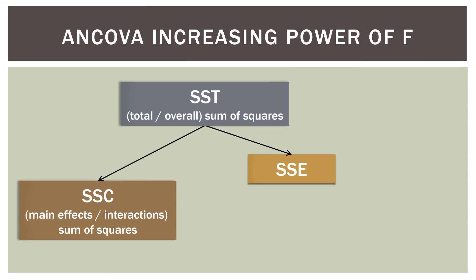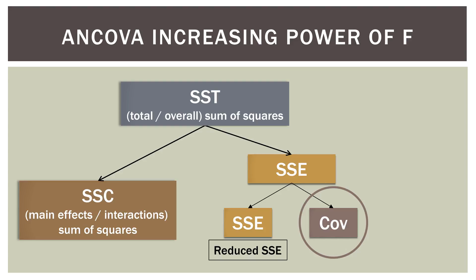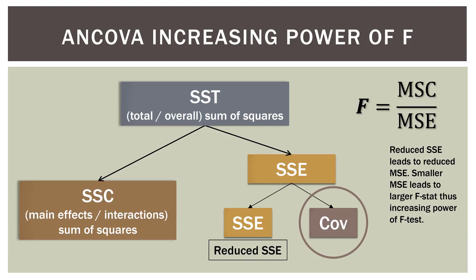In an ANOVA, we have our total sum of squares (SST), which is partitioned into the sum of squares due to main effects and interactions and the SSE, or sum of squares due to error. Once we introduce a covariate in ANCOVA, the SSE gets split again — whatever remaining SSE we have, some of that error is allocated to the covariate, resulting in a reduced SSE. What does that do to our F statistic? F is our mean sum of squares for the model divided by the mean square error. The reduced SSE leads to reduced MSE; smaller MSE leads to a larger F statistic, thus increasing the power of the F test. Because we reduce the SSE due to the presence of the covariate, we decrease the denominator in the F statistic and increase the power of the F test.